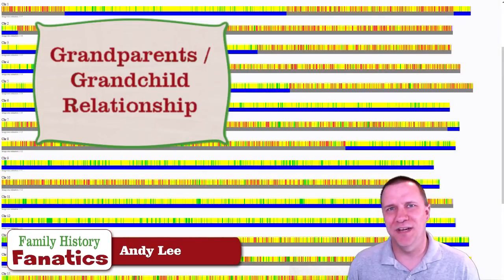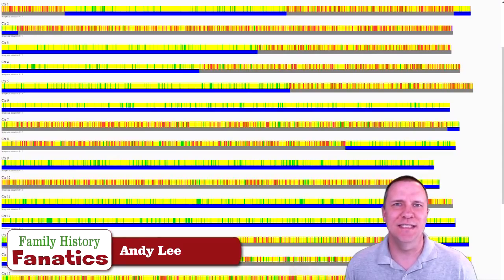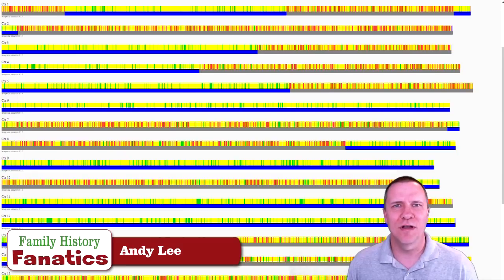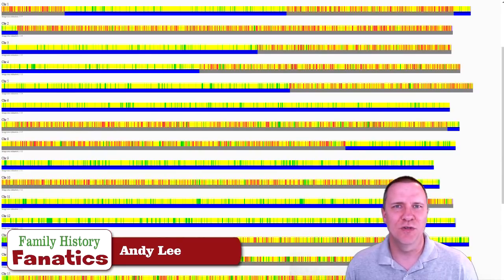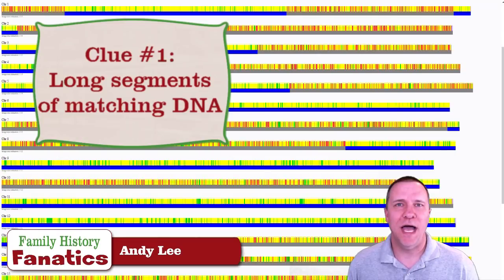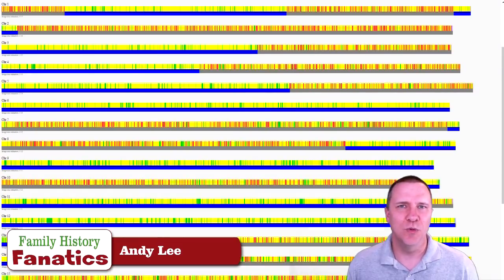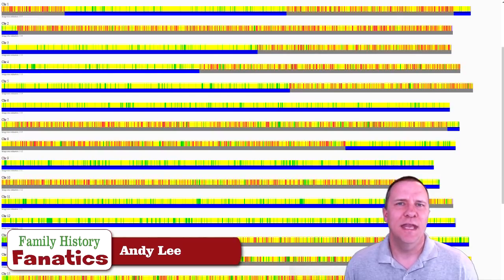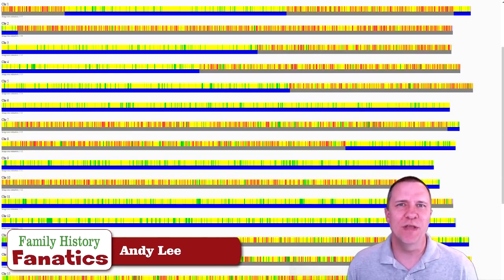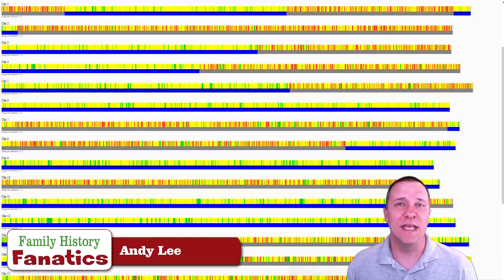The first relationship we're going to look at is a grandparent to grandchild relationship. What you see in this relationship is the recombination that's happened in the mother or father of that child — this is where chromosomes swap different places before being passed on to the children. Each chromosome is combined independently, but most chromosomes are only going to have one, two, or maybe three recombinations, and only in rare cases will you have four or more recombinations in a single chromosome.